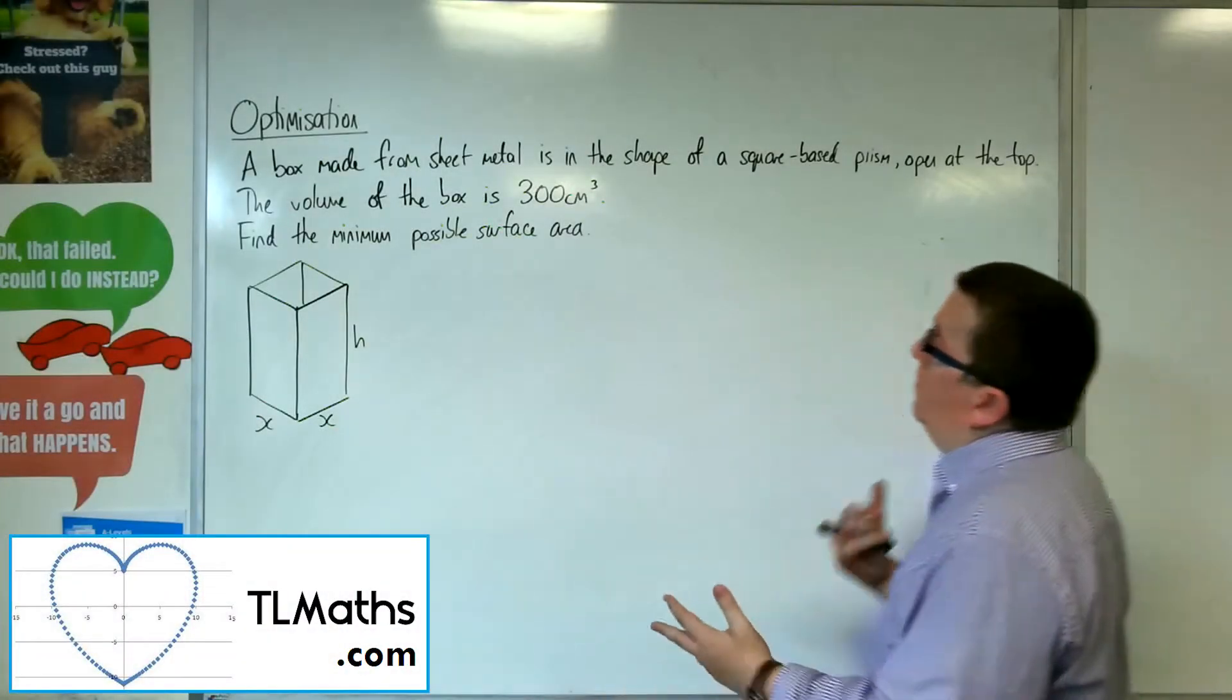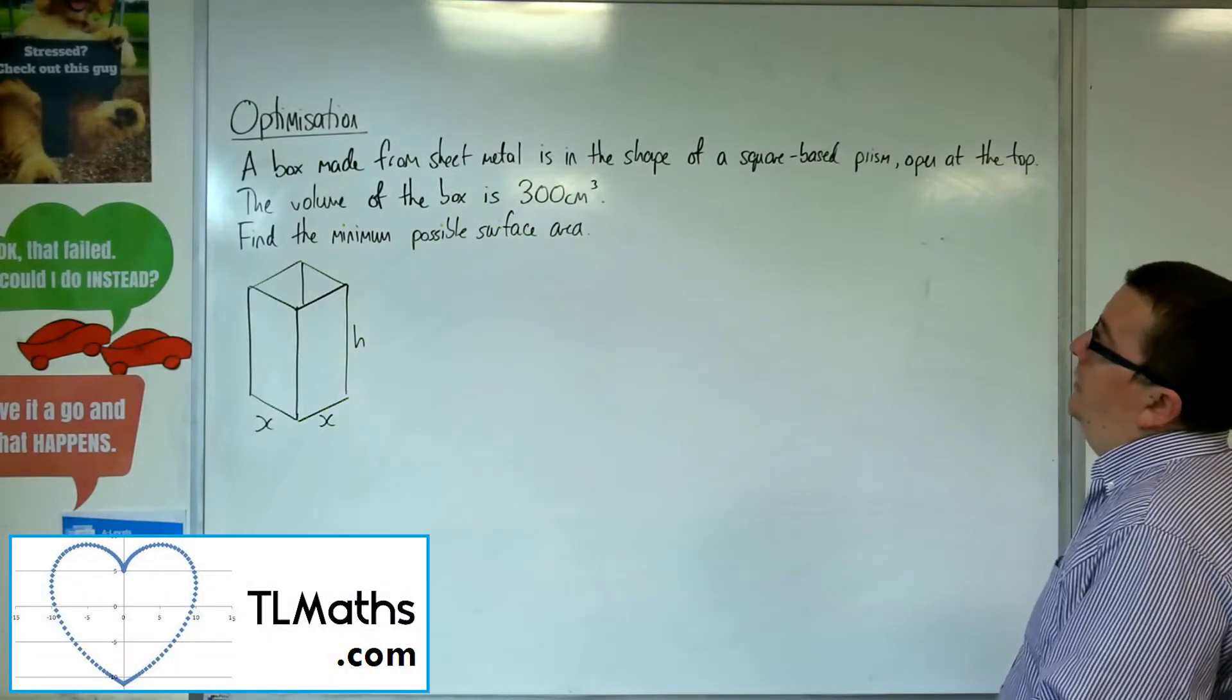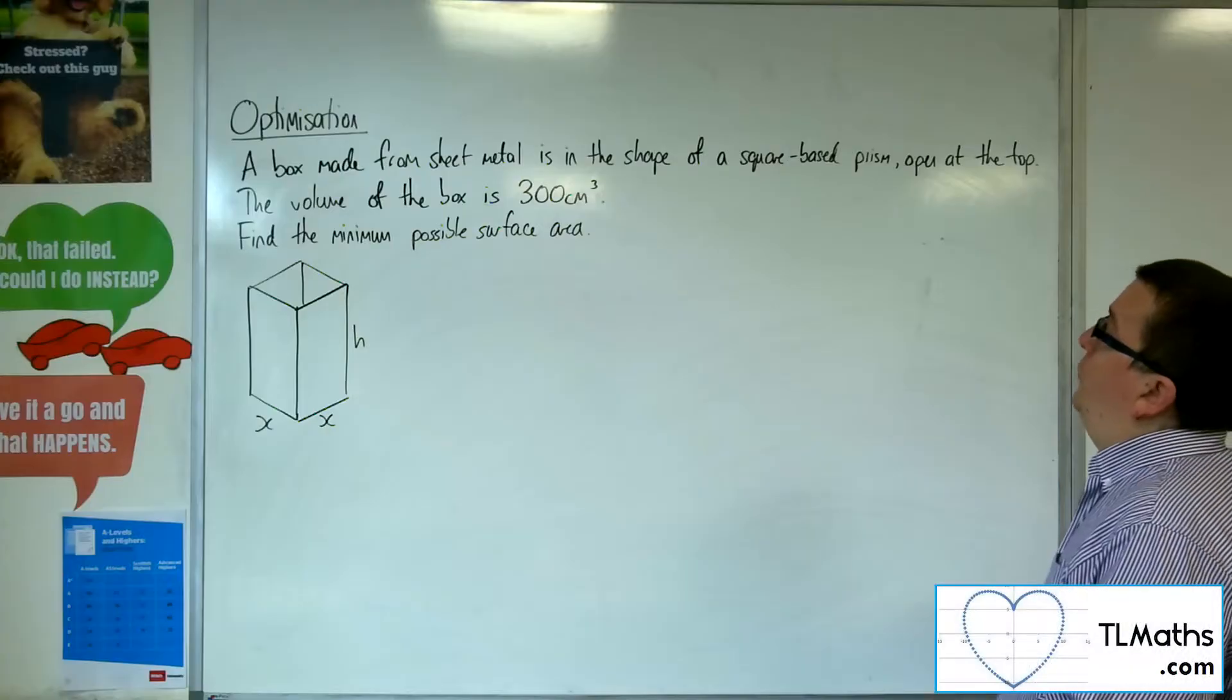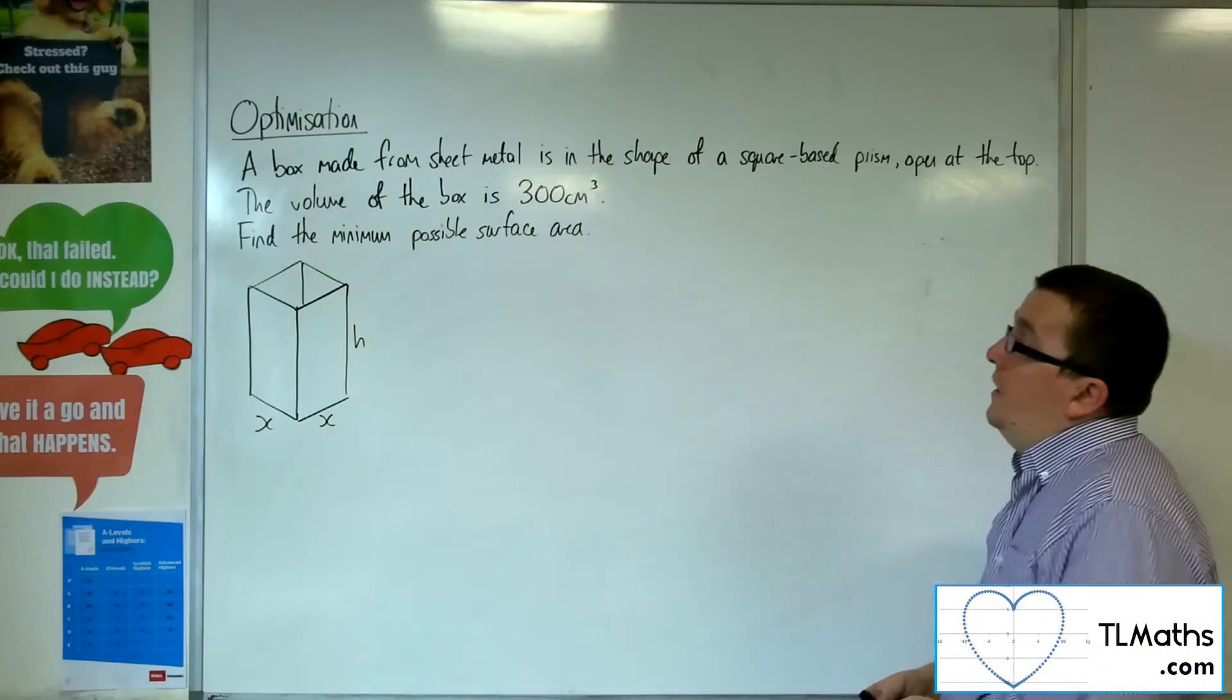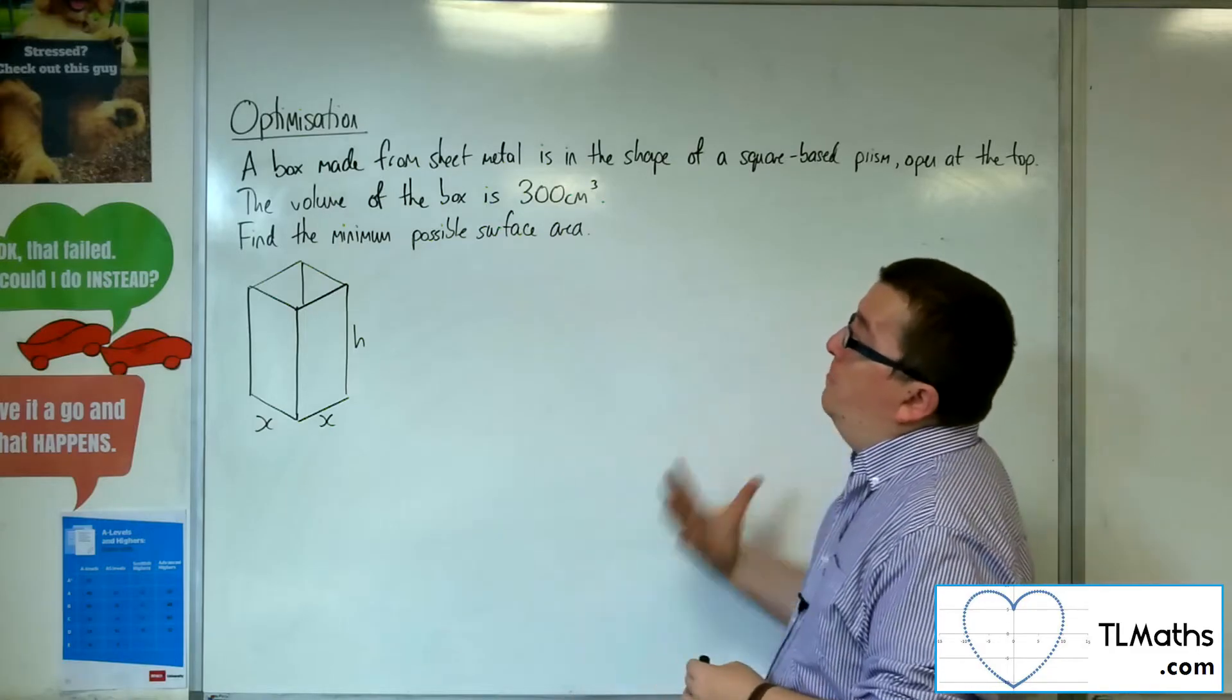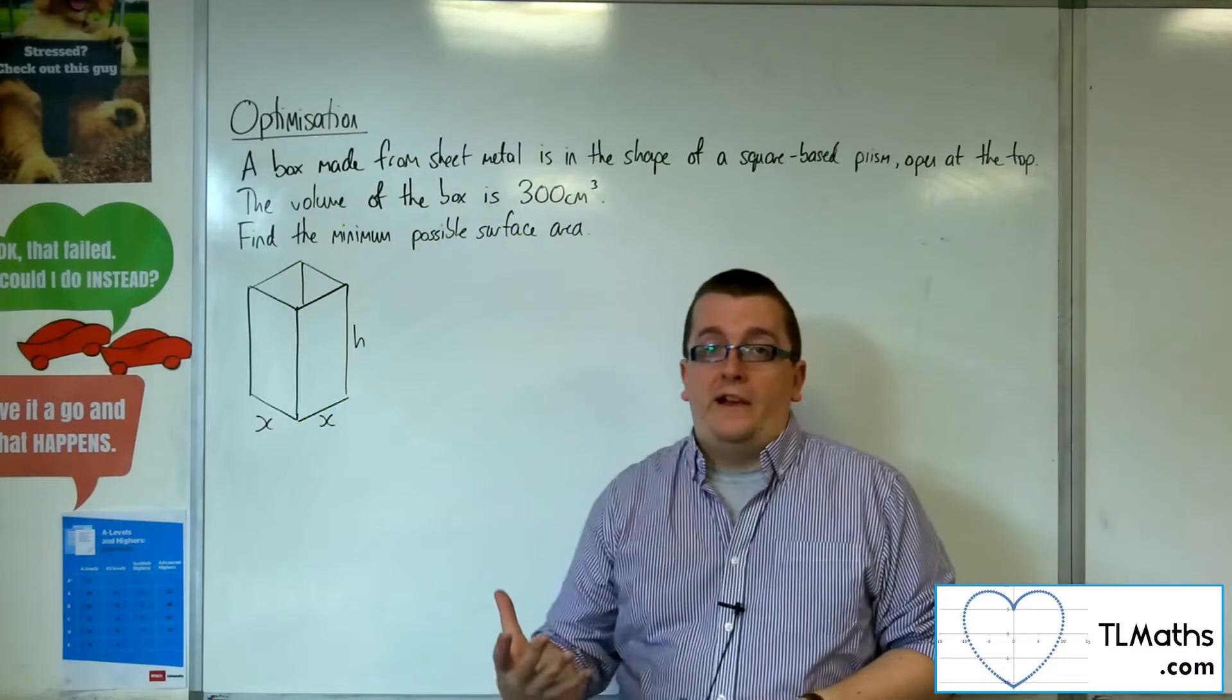Okay, in this problem we've got a box made from sheet metal in the shape of a square-based prism, open at the top. The volume of the box is 300 cubic centimeters. Find the minimum possible surface area.